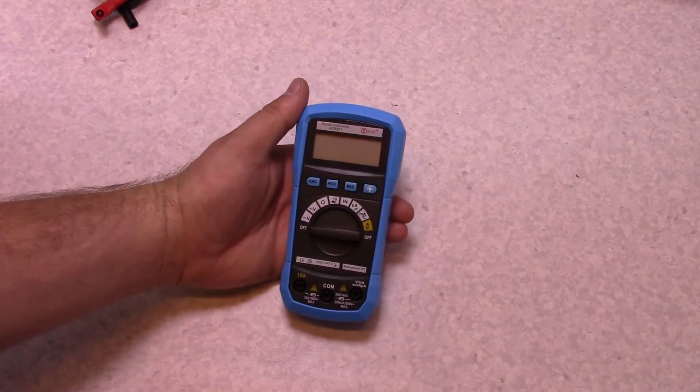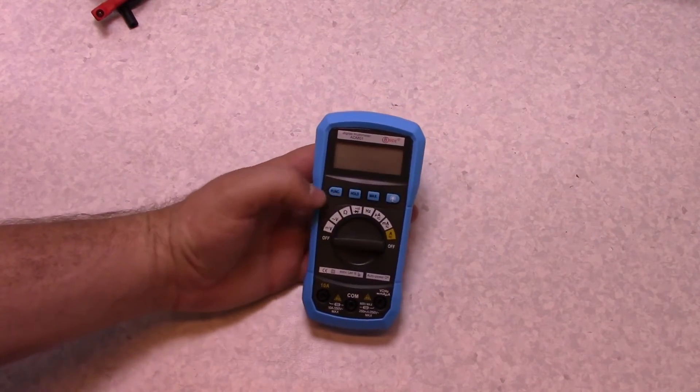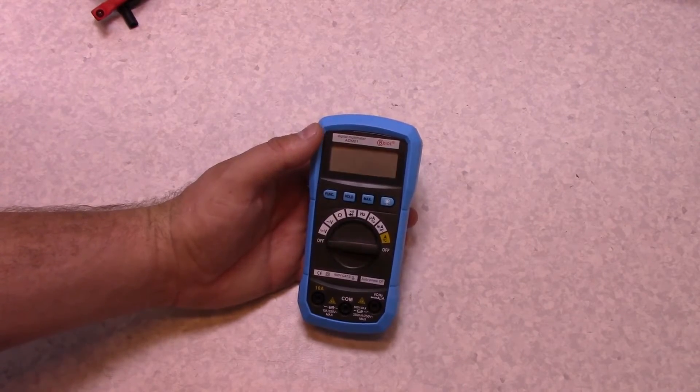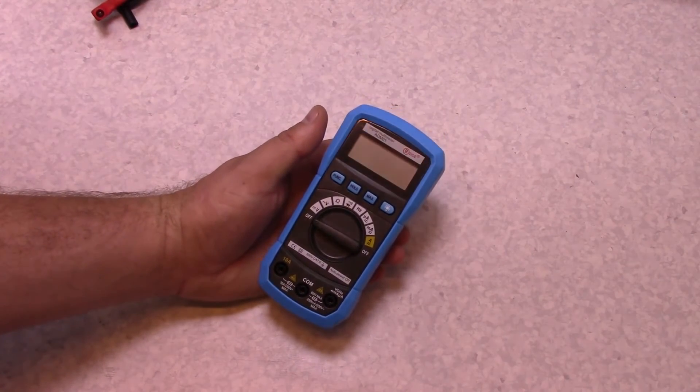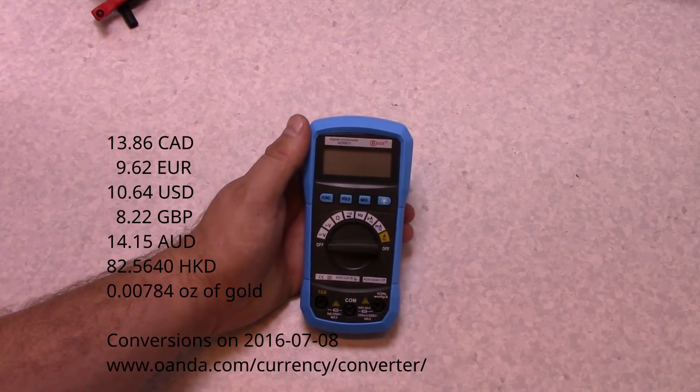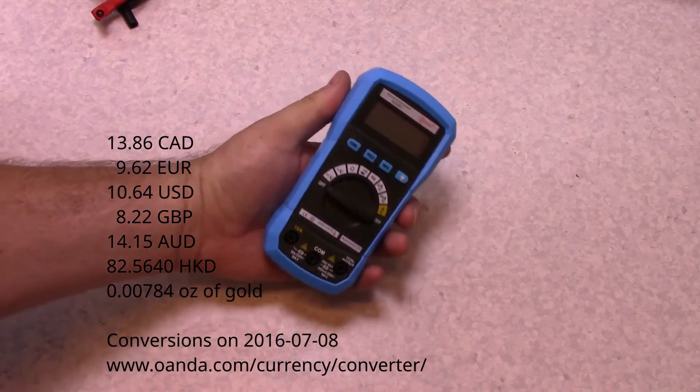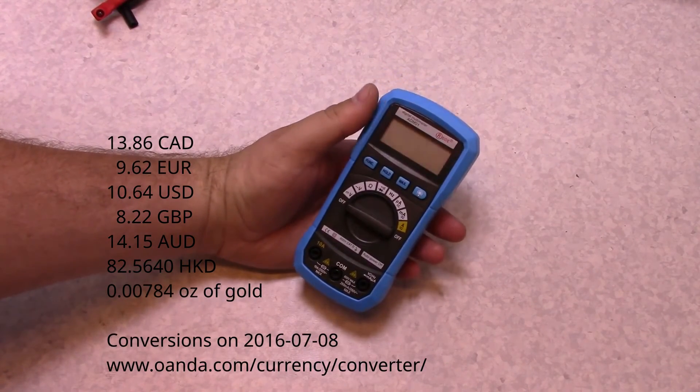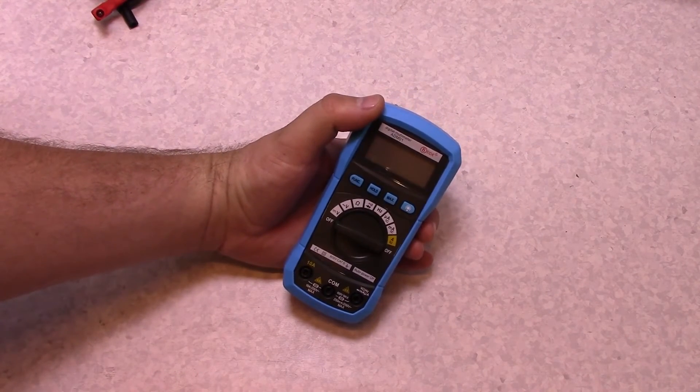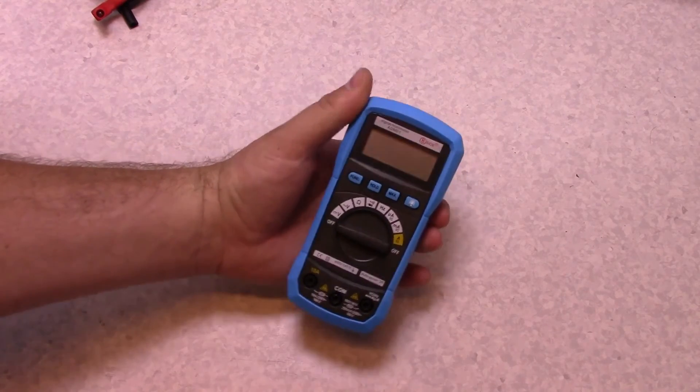All right, so I guess in conclusion, it's a meter. I didn't test everything out, obviously, really thoroughly. But it appears to function all right and reasonably well. I checked the price and I paid $13.86 with shipping in Canadian funds. So, it's a pretty damn cheap meter. It's definitely a big step up from the DT830, I think it is.